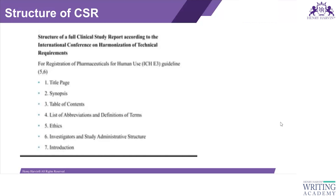Following the synopsis are the table of contents, list of abbreviations and definitions, and an ethics section. The ethics section states which guidelines were followed — for example, in India: ICGCP guidelines, New Drug Clinical Trial Rules 2019, the Declaration of Helsinki, and ICMR guidelines. After ethics comes the investigators and administrative structure section, listing all investigators, sub-investigators, co-investigators, their respective sites, and all other staff involved.